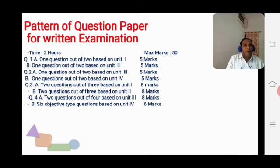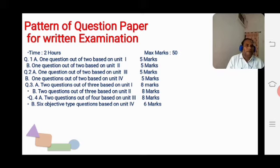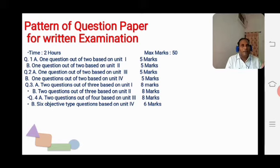Now we are talking about the pattern of the Question Paper for Written Examination. Theory Paper carries 50 marks, Practical Examination carries 30 marks, and Internal Assessment carries 20 marks. The Theory Paper: time is 2 hours, maximum marks 50. Question 1a — one question out of 2, based on Unit 1, carries 5 marks. Question 1b — one question out of 2, based on Unit 2, carries 5 marks. Question 2a — one question out of 2, based on Unit 3, for 5 marks. Question 2b — one question out of 2, based on Unit 4, carries 5 marks.